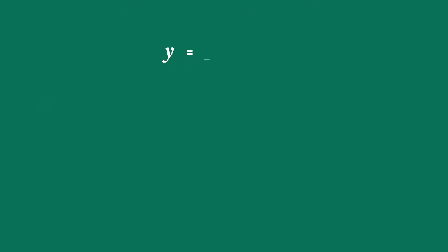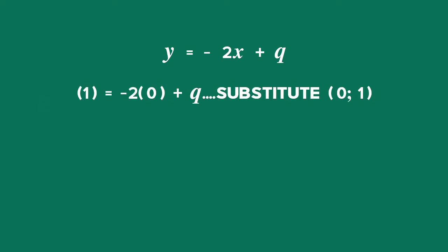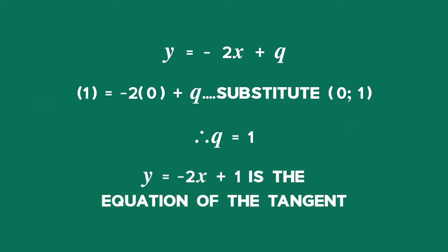y = −2x + q. Substitute for x and y: 1 = −2 × 0 + q, so q = 1. Therefore y = −2x + 1 is the equation of the tangent to the curve at the point (0, 1).